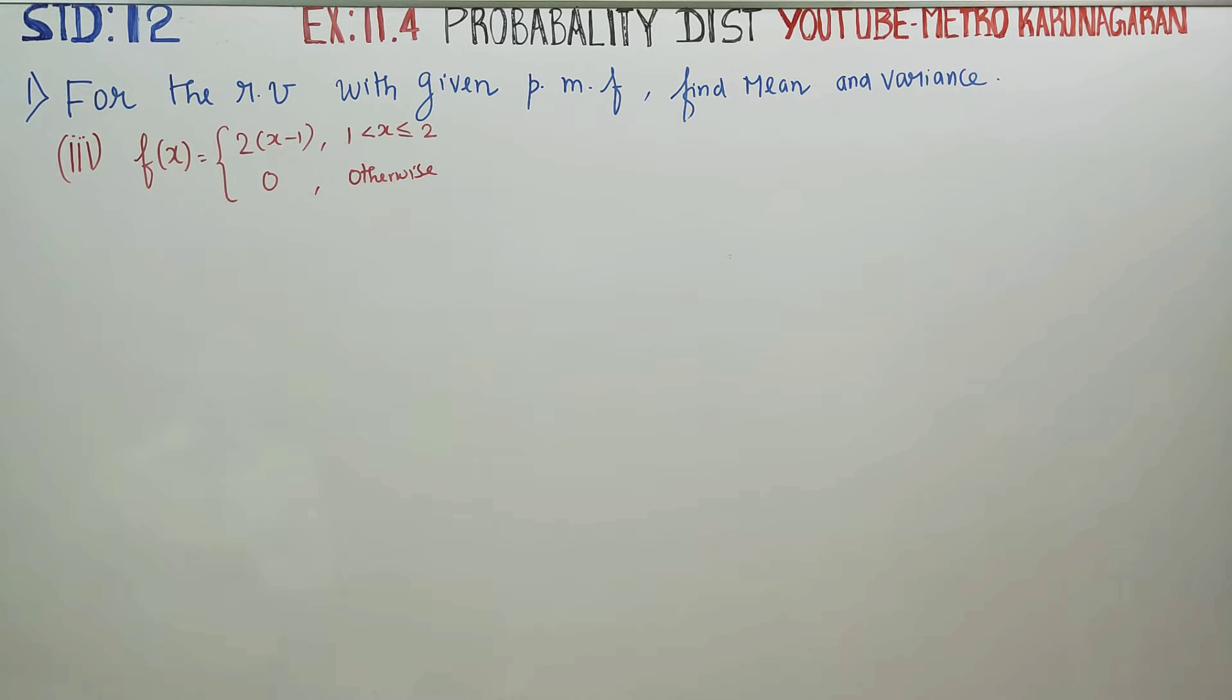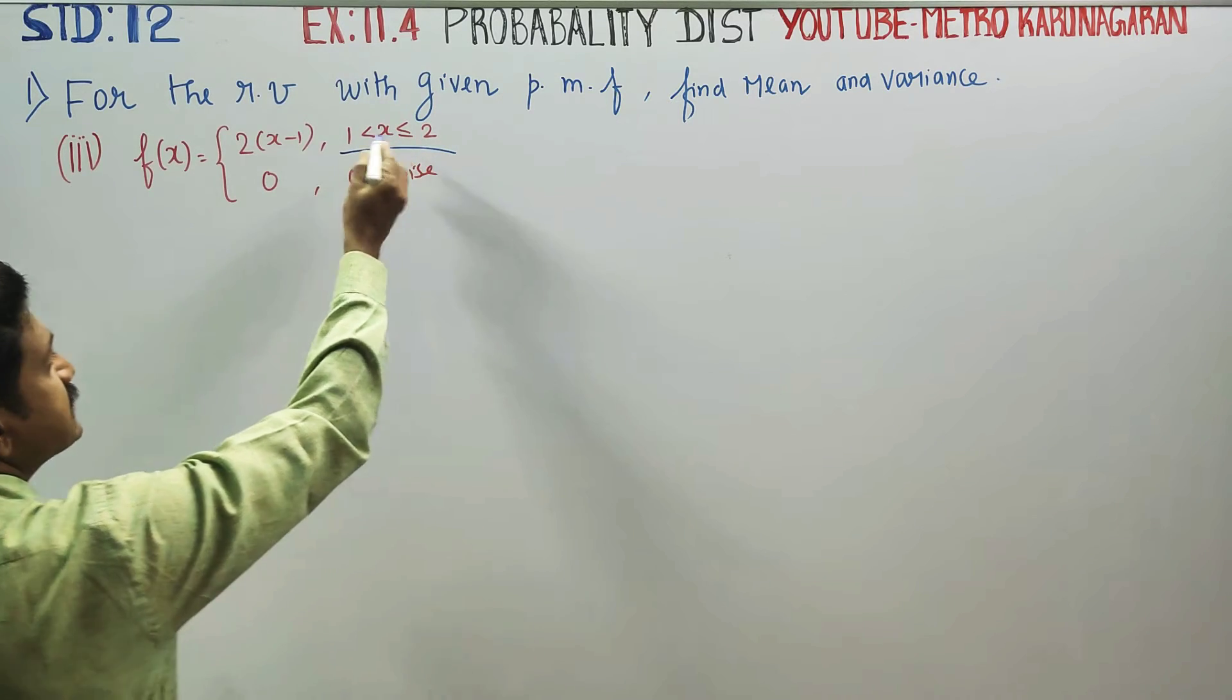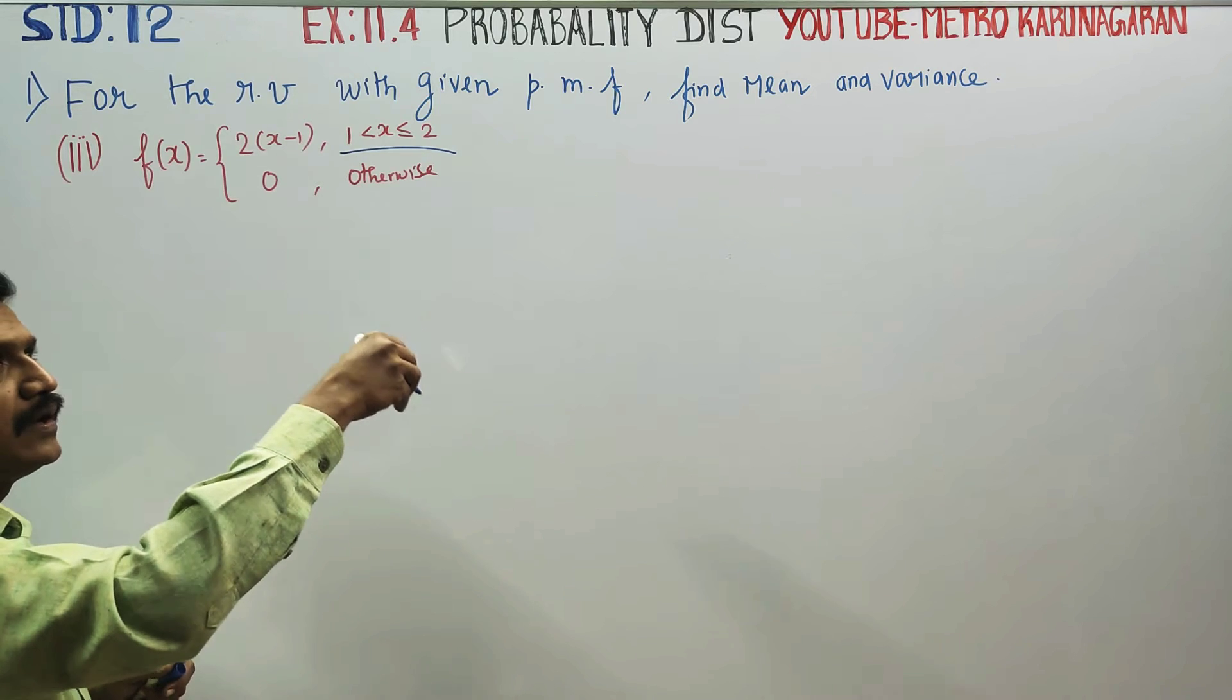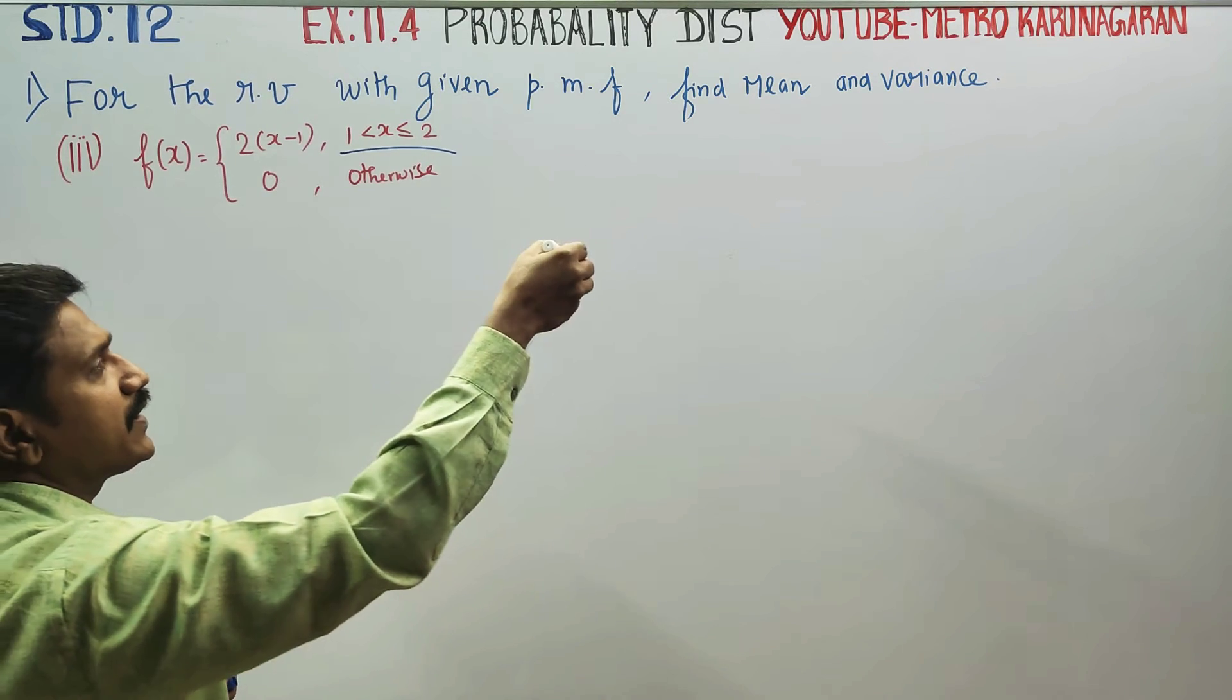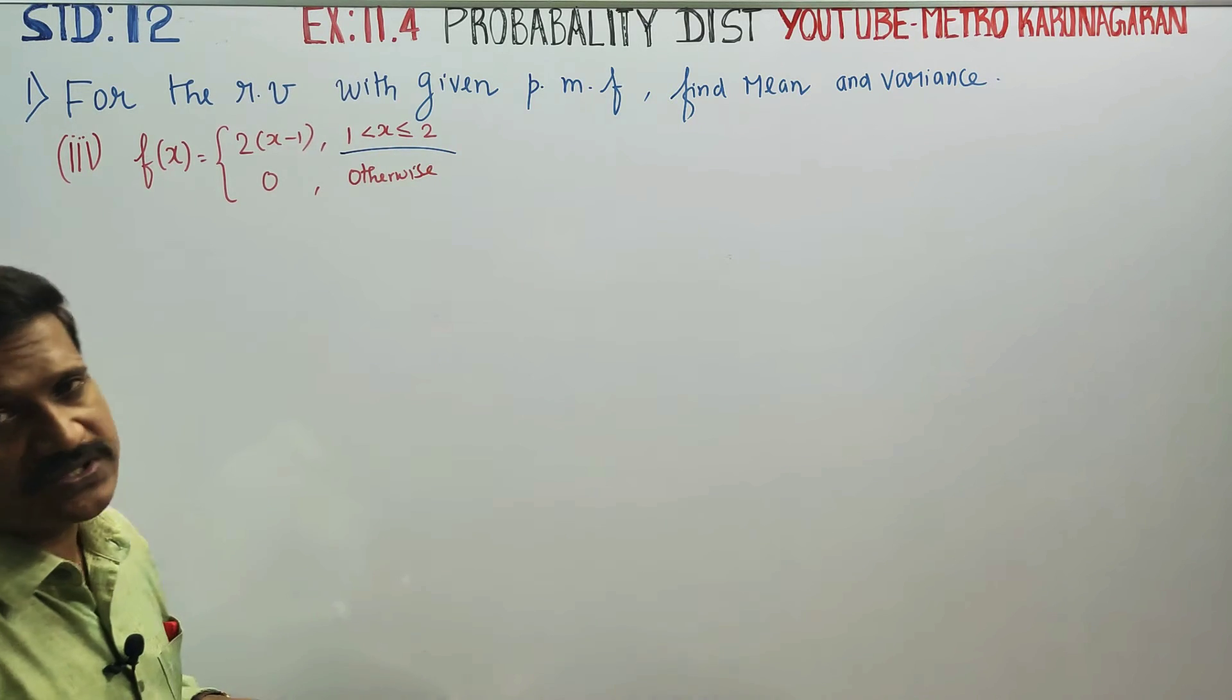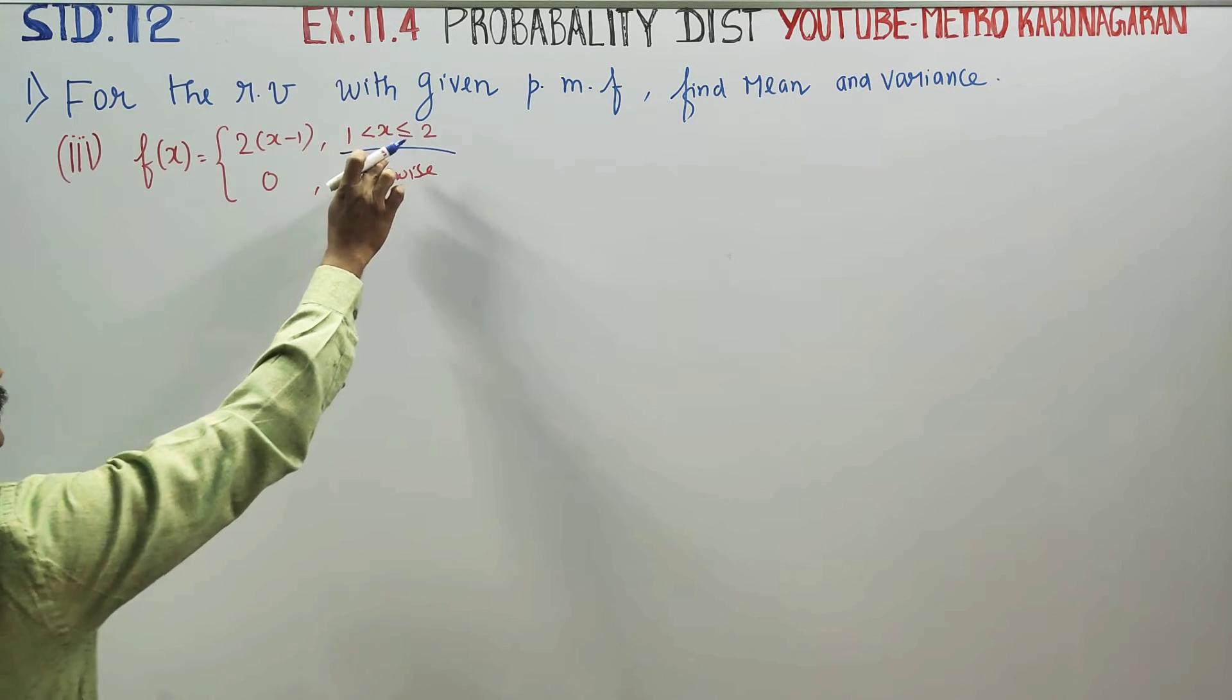Now if you look at the problem, f of x is equal to 2 into x minus 1, where x lies between 1 and 2. The values are x equals 1, 1.1, 1.2, 1.5, 1.8. This is a continuous function, continuous random variable.